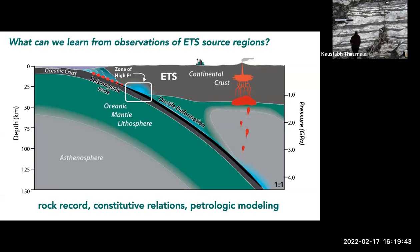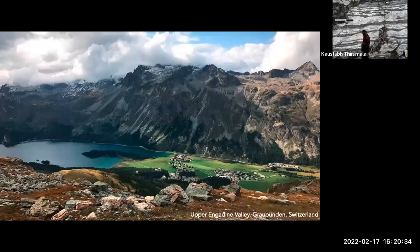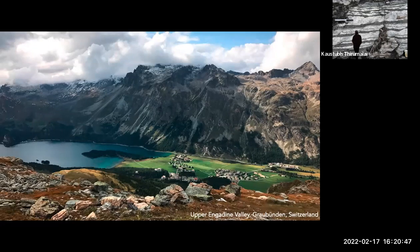A lot of people see rocks that are broken or have viscous features and say that must be slow slip. I've taken a different perspective, which is trying to look at what the rock record can actually tell us about what kind of deformation rocks can accommodate — combining observations of how they're deforming with our understanding of constitutive relations or flow laws, and also using petrologic modeling to look at how fluids may be behaving or sourced. So I'm looking at what the environment of slow slip looks like and then using that to preclude or include potential mechanisms.